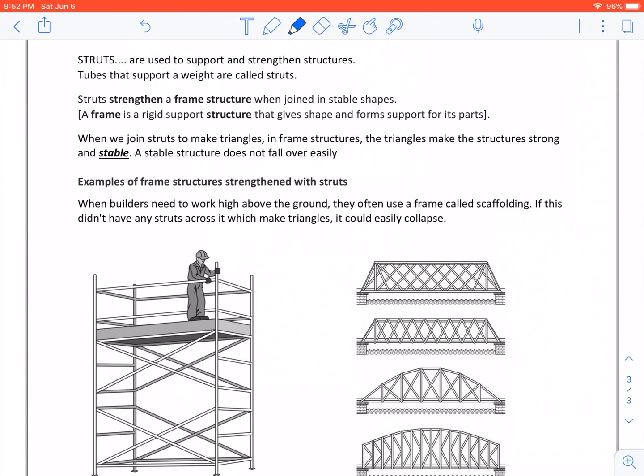Struts. Struts are used to support and strengthen structures. Tubes that support a weight are called struts. Struts strengthen a frame structure when joined in stable shapes. A frame is a rigid support structure that gives shape and forms support for its parts. When we join struts to make triangles in frame structures, the triangles make the structure strong and stable. A stable structure does not fall over easily.